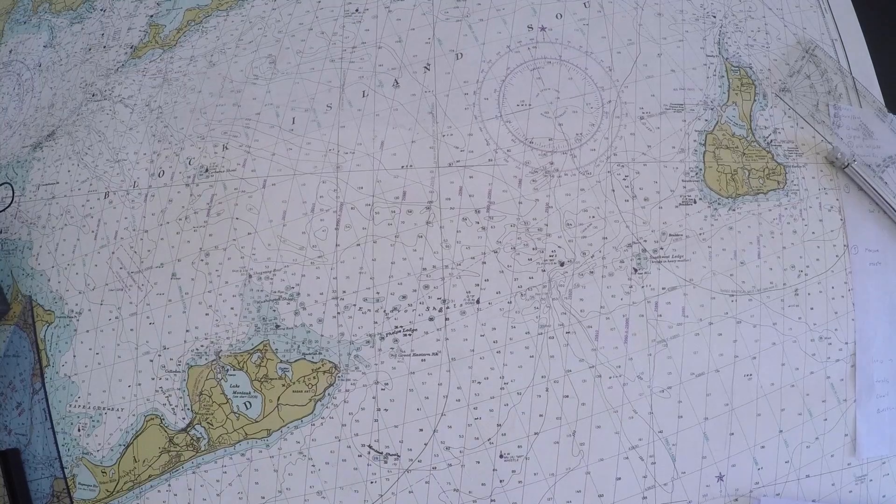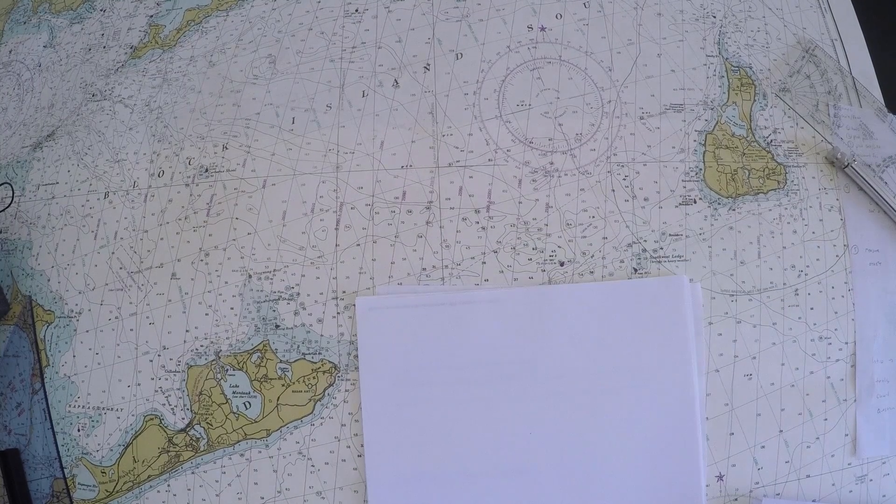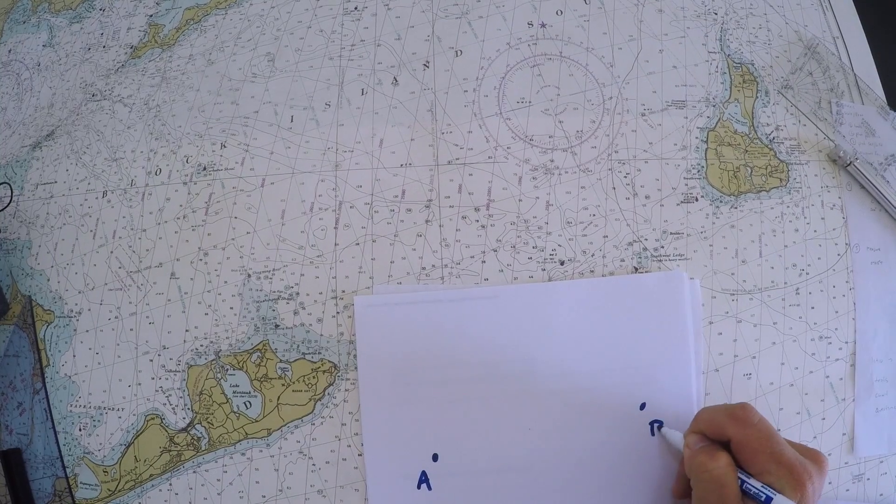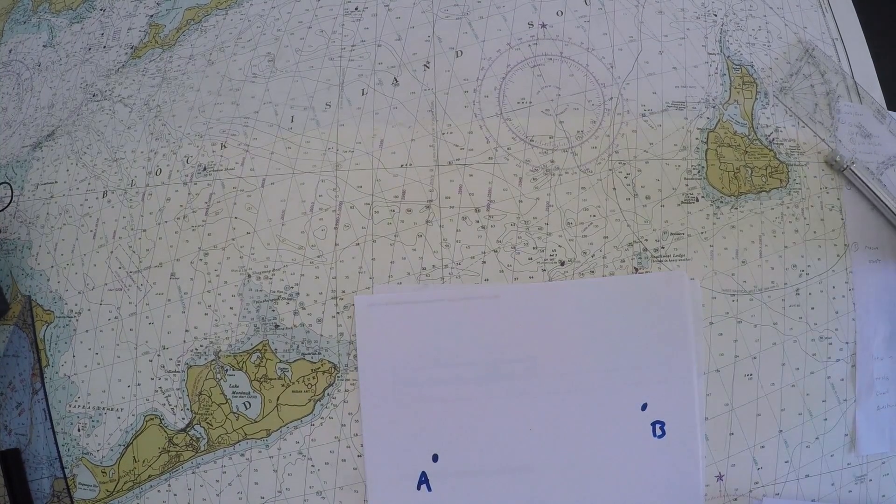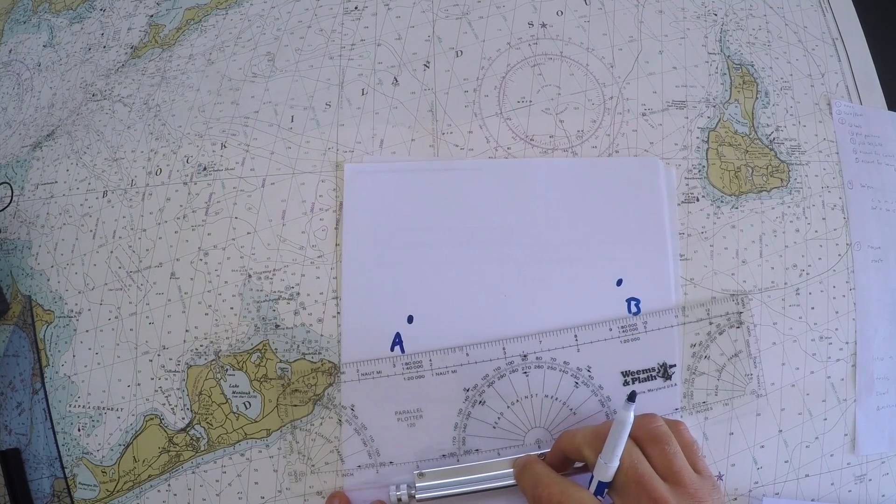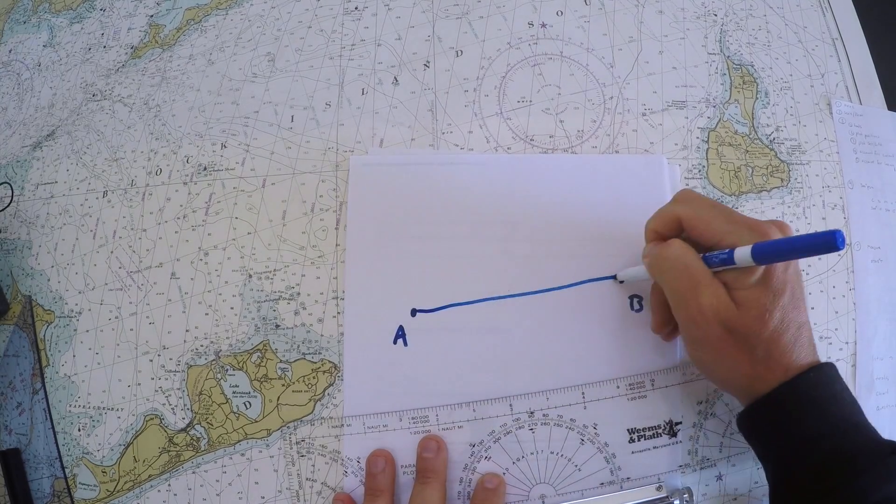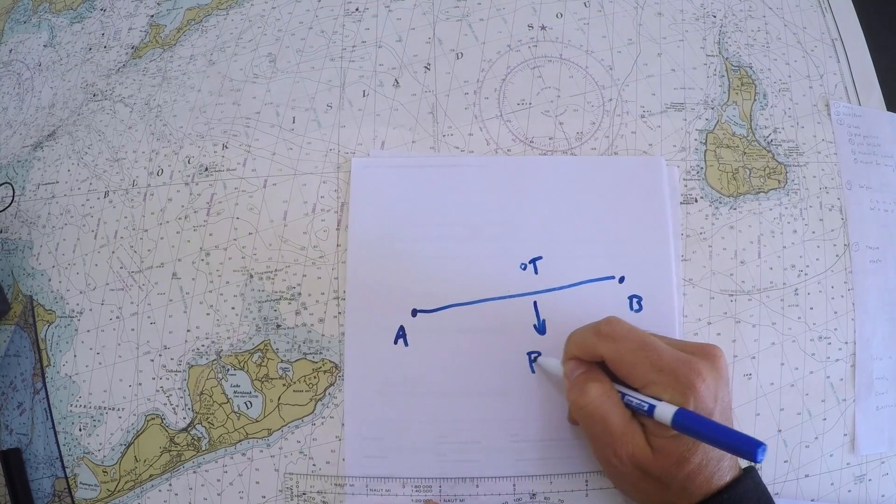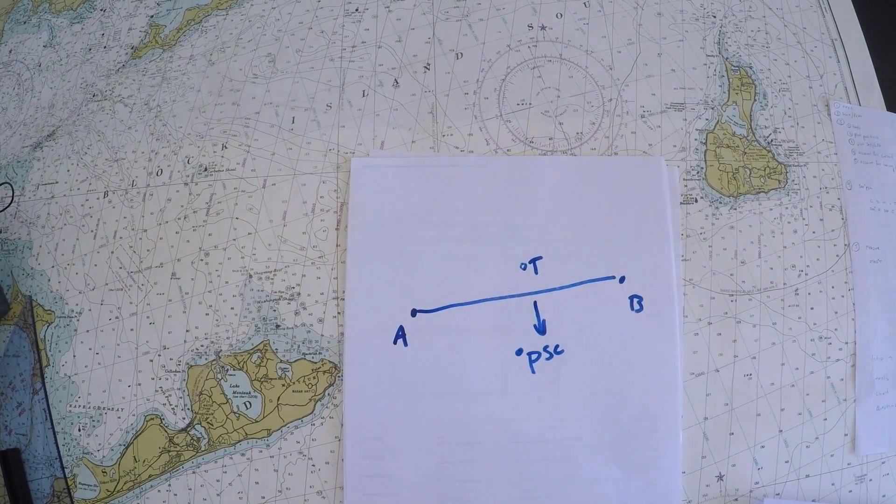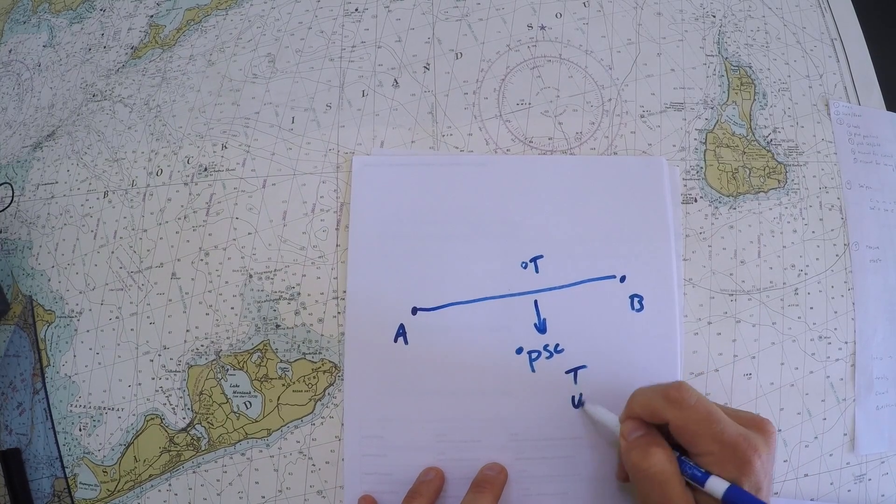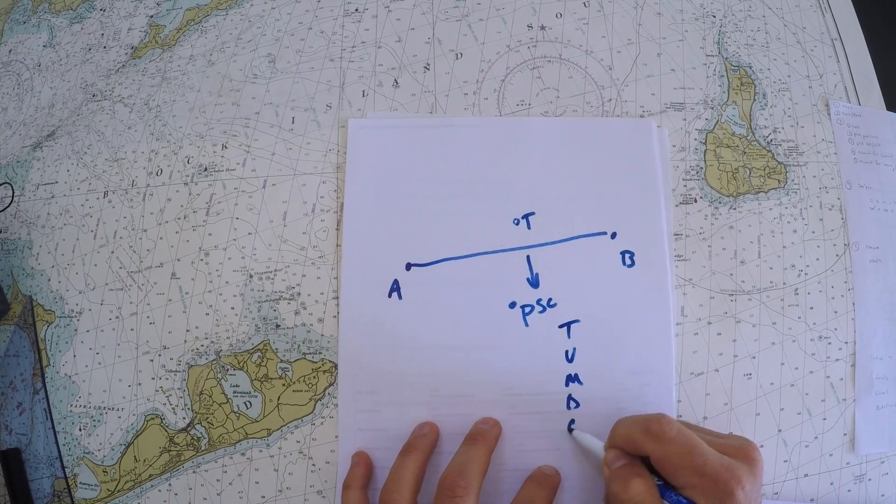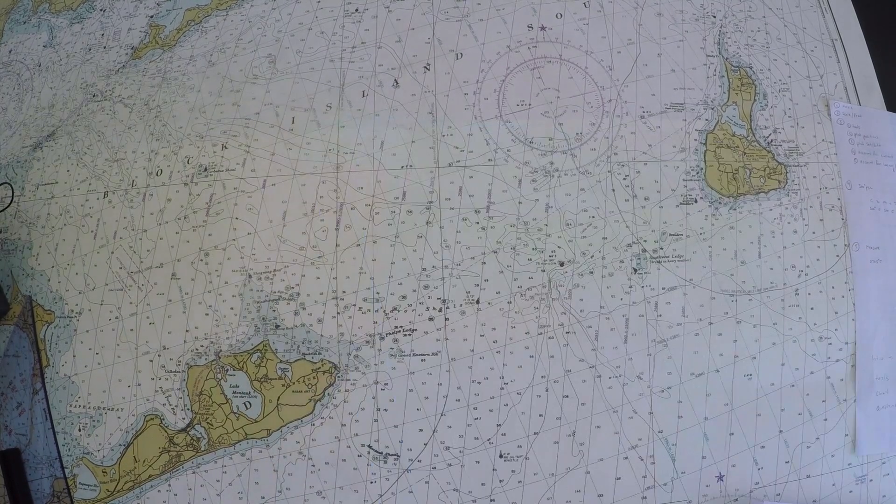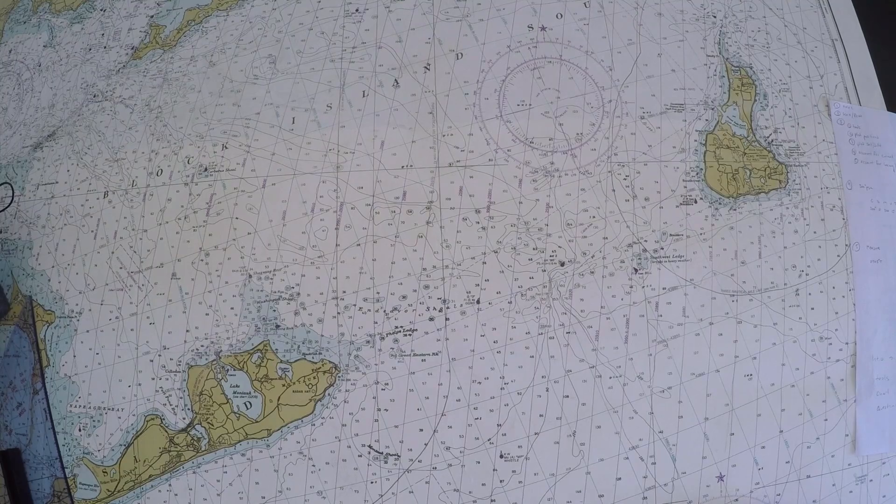My strategy for solving this question will be: plot point A, plot point B, then measure the line between them in degrees true, and then convert that to degrees per steering compass using the acronym True Vampires Make Dull Companions At Wakes. That'll be the strategy on how we solve the problem, but first we need to plot the position.